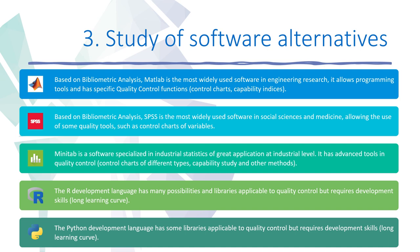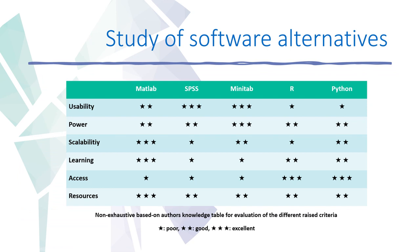Finally, a comparison table was made to illustrate the conclusions. As can be seen, there is no perfect solution, but each has potentialities and weaknesses. In the case of R and Python, the main advantage is that they are free resources, and the main problem is the difficulty of handling them for students who do not know how to program.